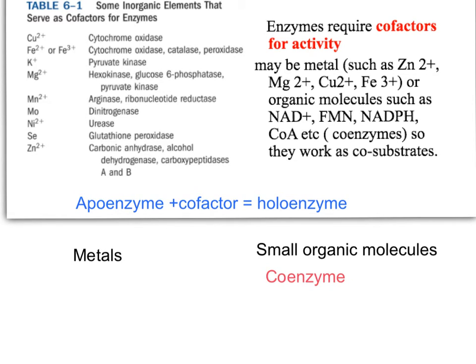An enzyme without the cofactor is called an apoenzyme. This apoenzyme has no catalytic activity. It will not accelerate the rate of reaction. An enzyme with its cofactor, or apoenzyme with its cofactor, is called a holoenzyme.